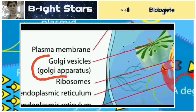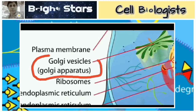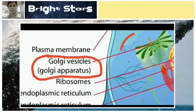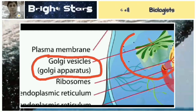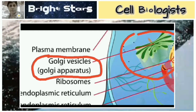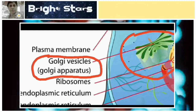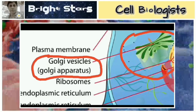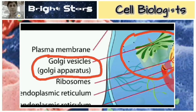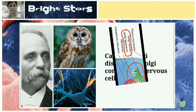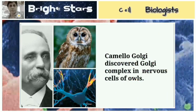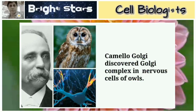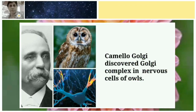The Golgi apparatus is the secretory organelle of the cell. Golgi discovered the Golgi complex in nervous cells.